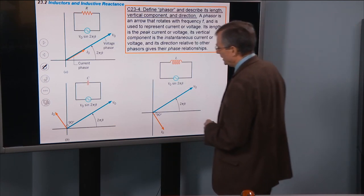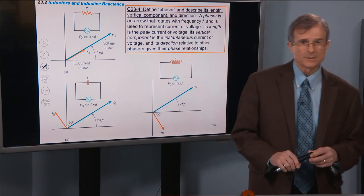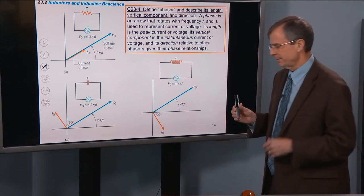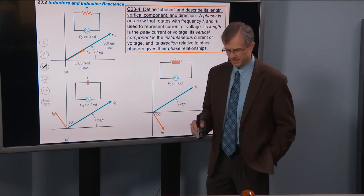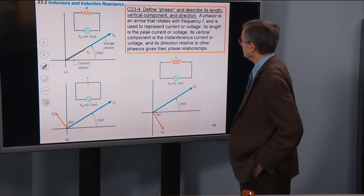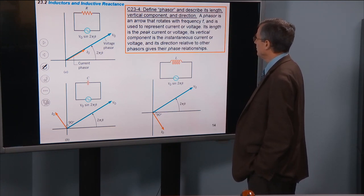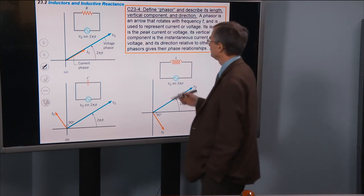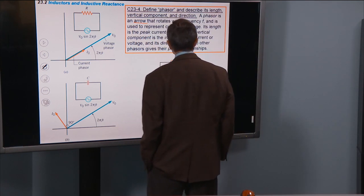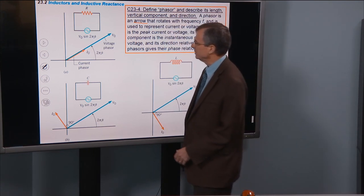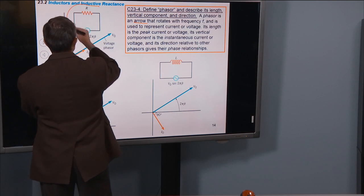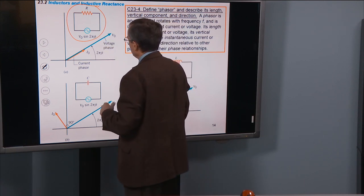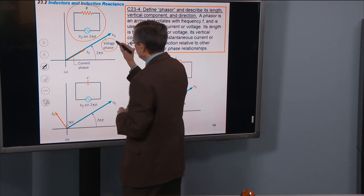Okay, we're going to define the phasor. Phasors are similar to vectors, but they are particularly useful in these circuits that involve phase lags and phase gains and lags. Define phasor and describe its length, vertical component, and direction. A phasor is just an arrow, like a vector, that rotates with frequency f. So let me do an example. This is in the case of a purely resistive circuit. This graph on the upper left-hand corner is for a purely resistive circuit.